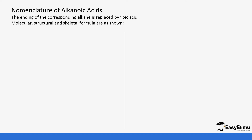So the first member in the series is methane — that's the alkane — so we change the E and it becomes OIC, so it becomes methanoic acid. That's how we change the E to OIC.